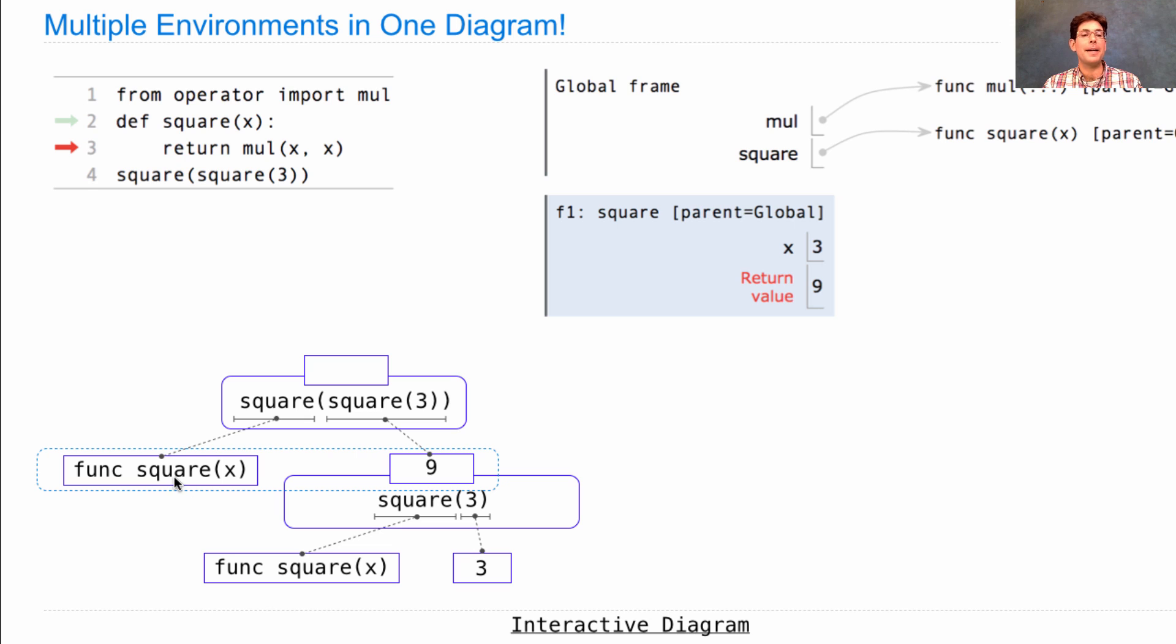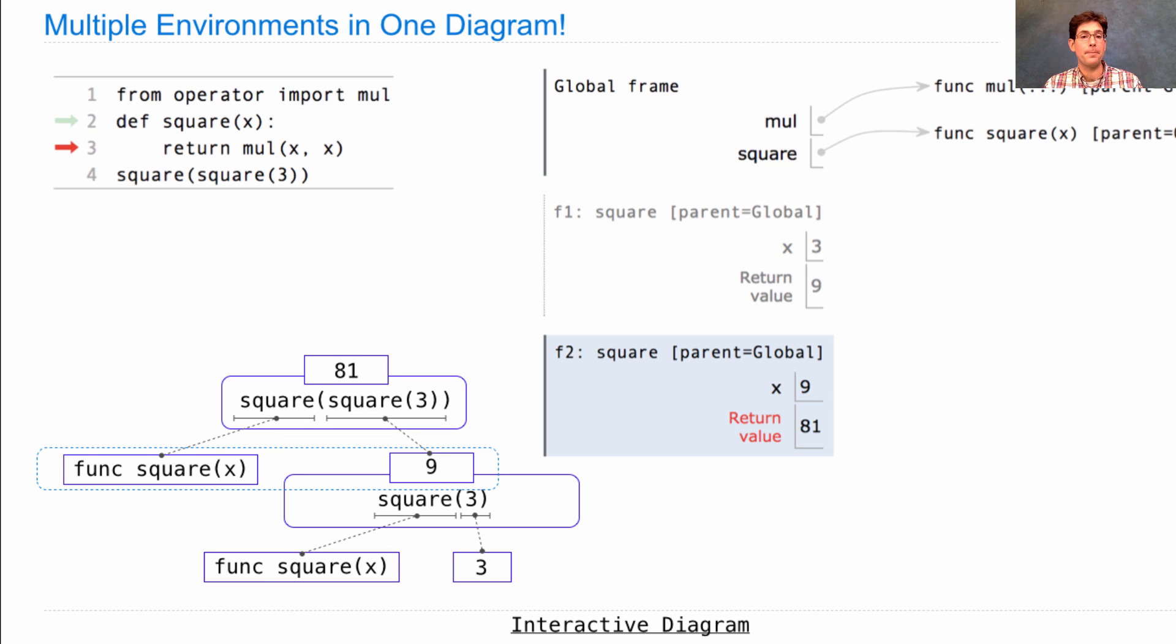And next thing we'll do is we'll apply the square function, that same function, to a new argument, the argument 9. And so we repeat the same steps that we did before. We introduce a new frame. We bind the formal parameter x to the argument value, which this time is 9 instead of 3. And then we multiply x times x, which is 9 times 9 in this case, and we get 81, the return value and the value of the whole expression.